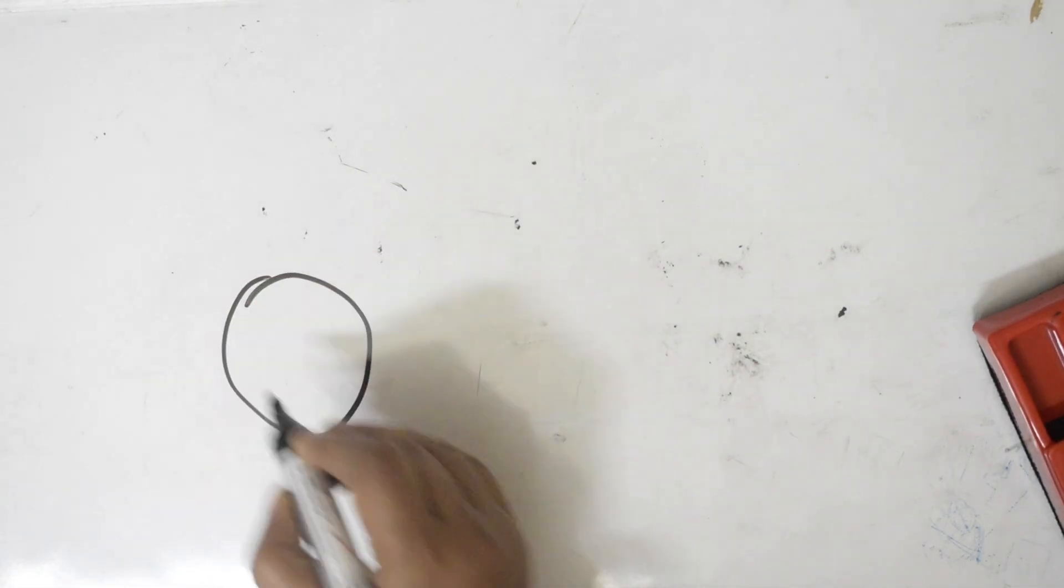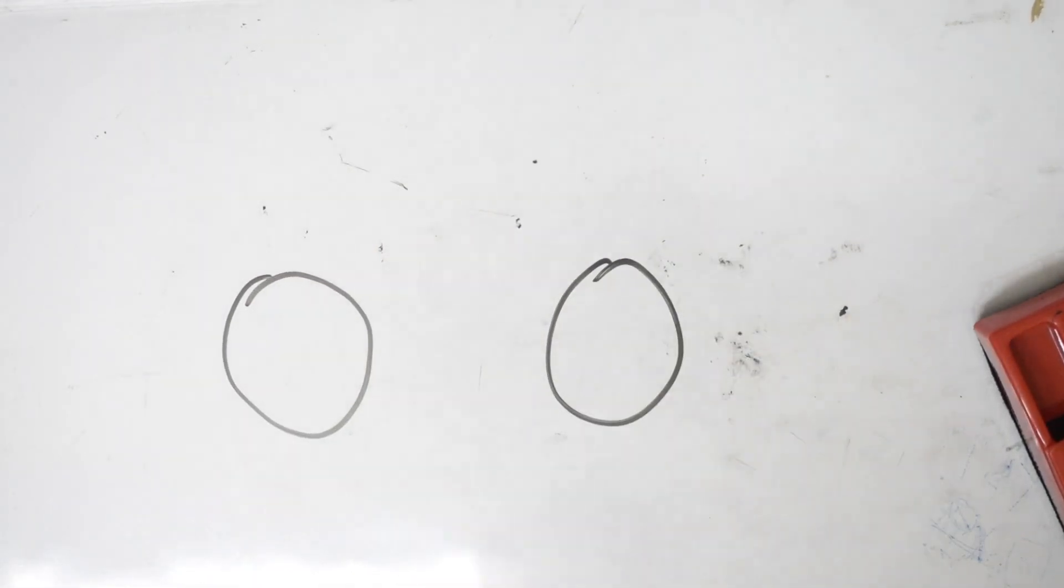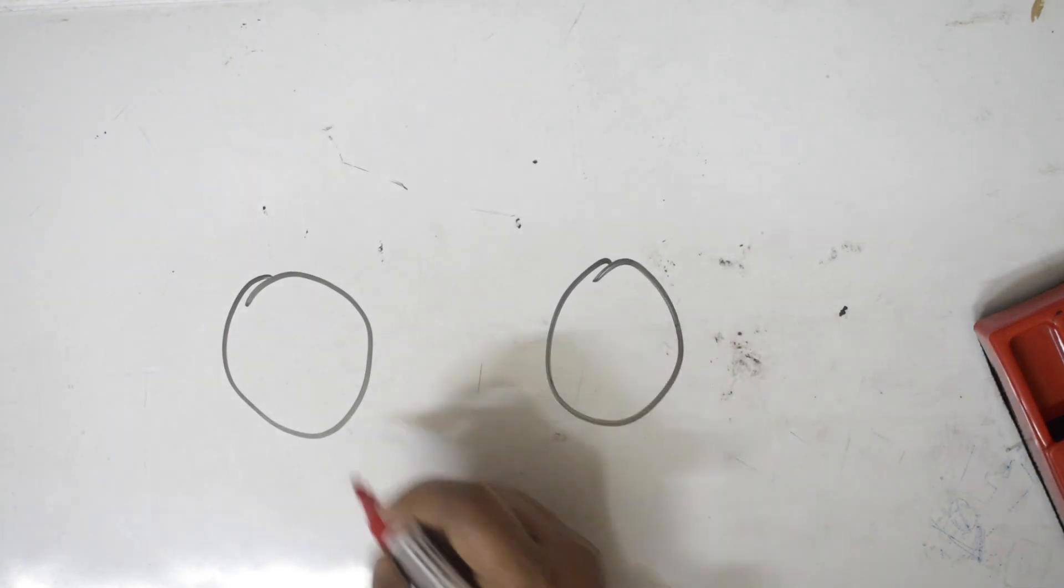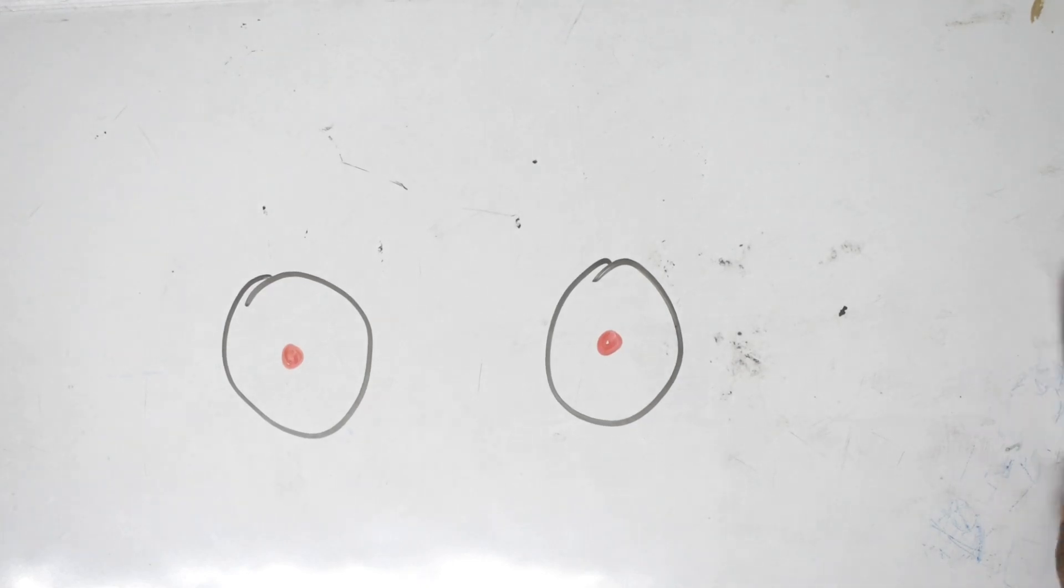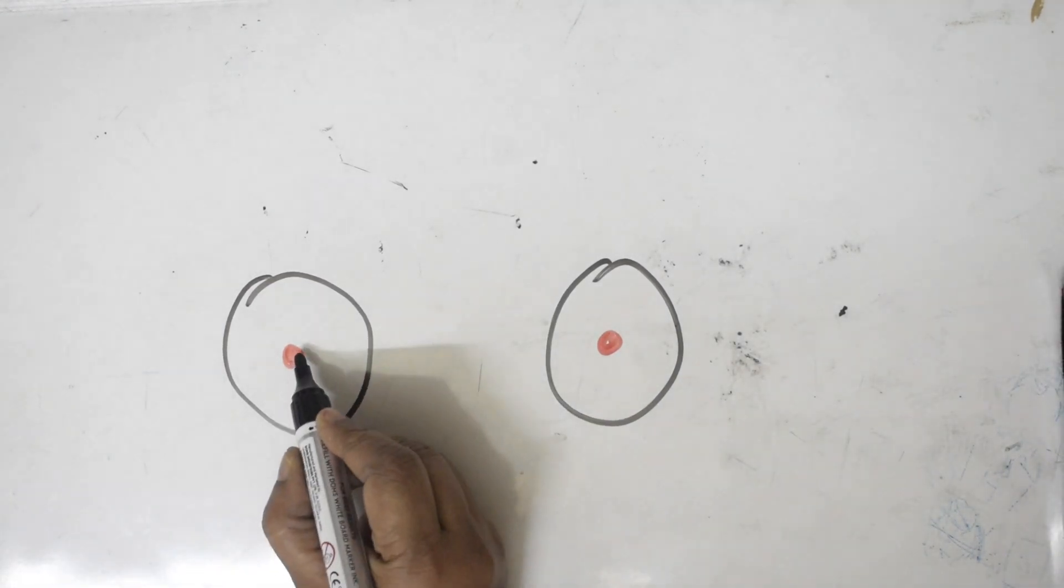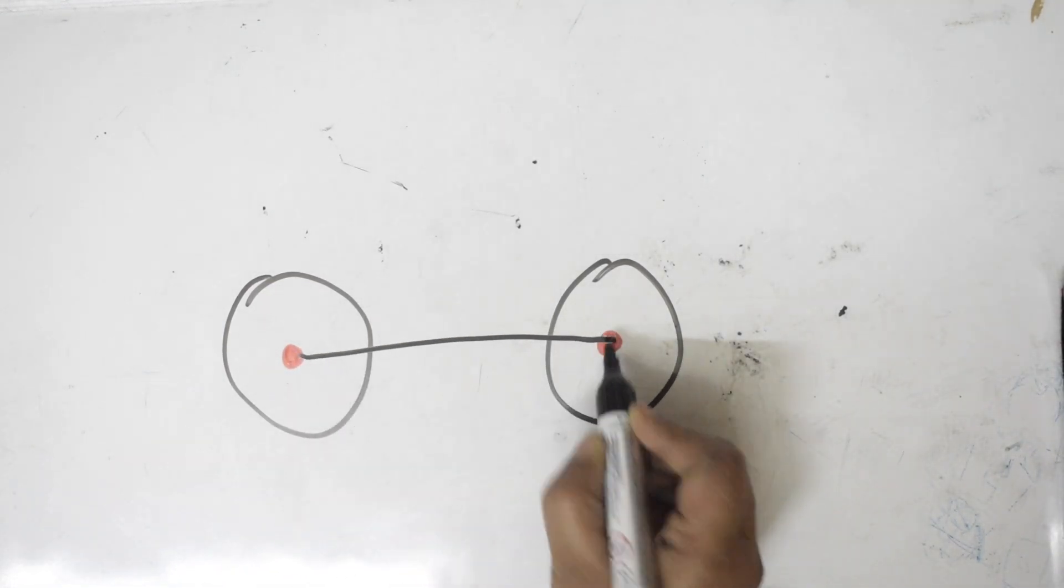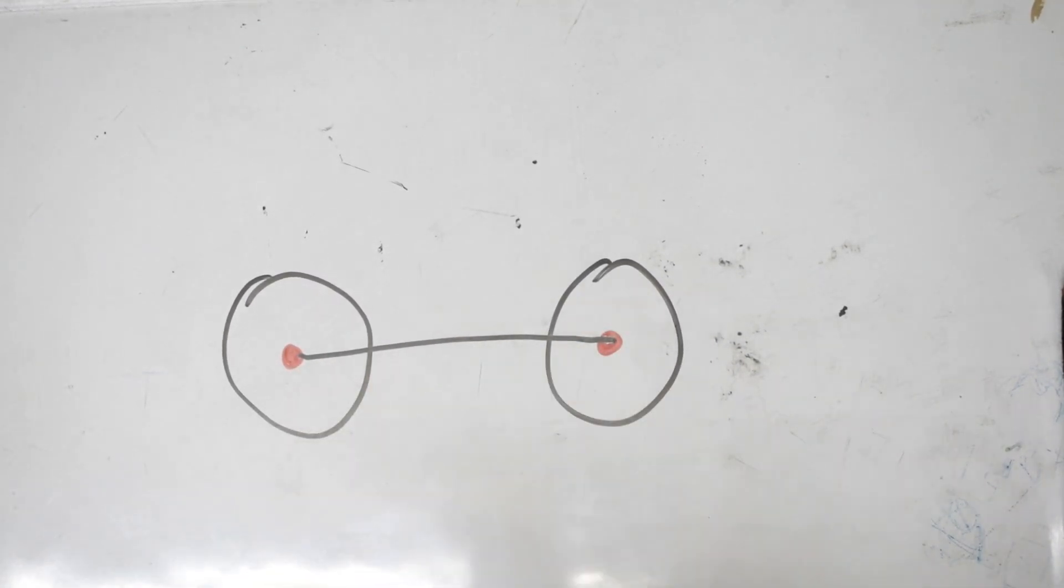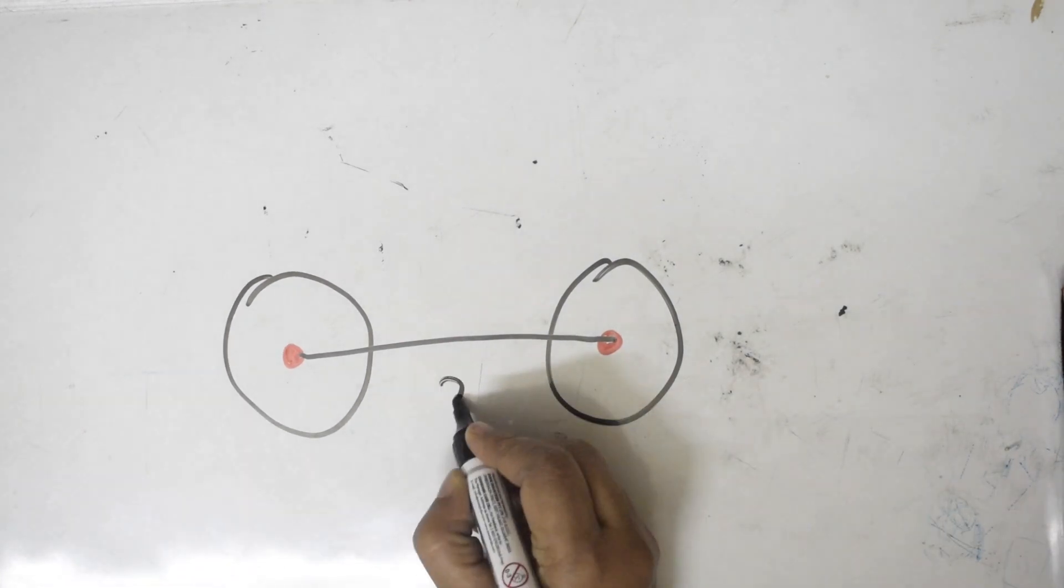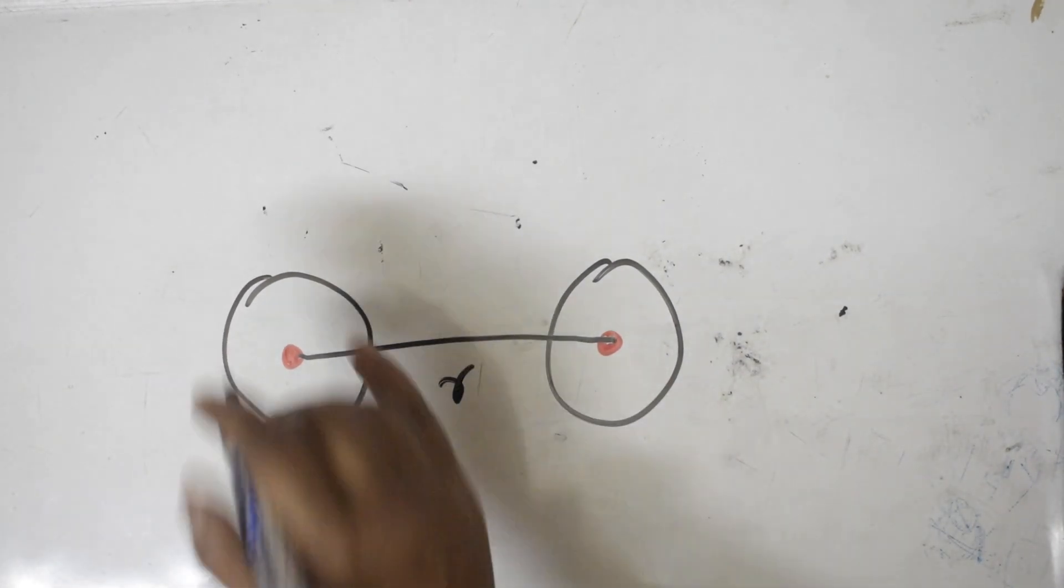Suppose I have two atoms in this way, one atom and one more atom. In the center of these two atoms you have nucleus. Now when I draw a line from the center of the nucleus to one more nucleus, this is called internuclear distance.